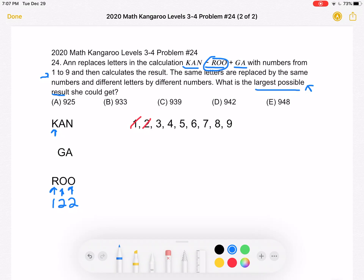If we want the sum to be the greatest, then the hundreds place should be the greatest digit we can choose, which would be 9.